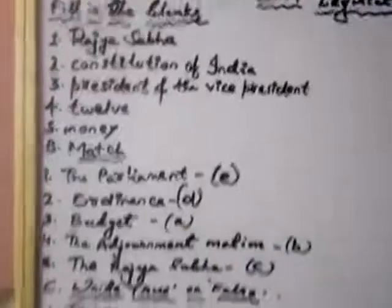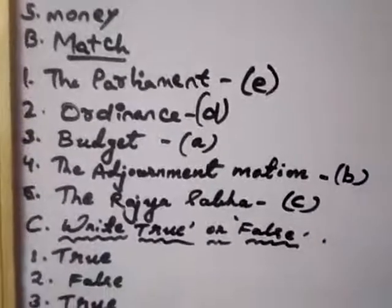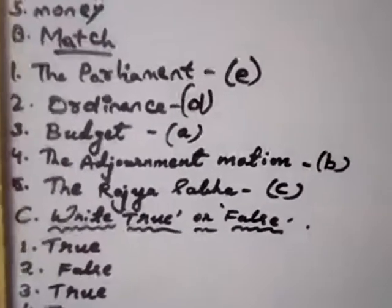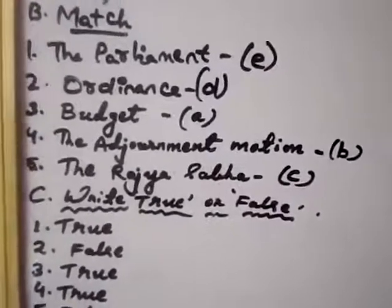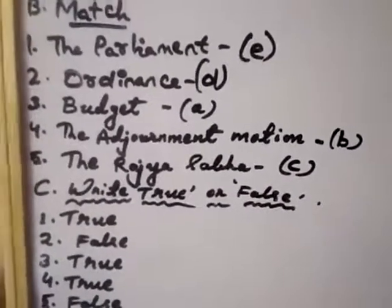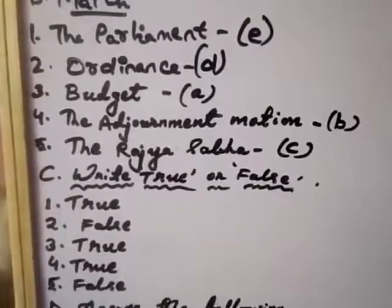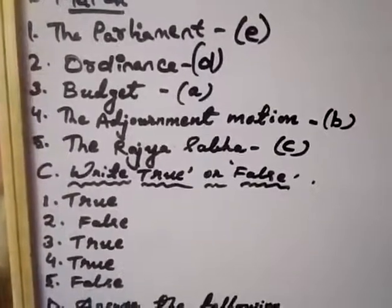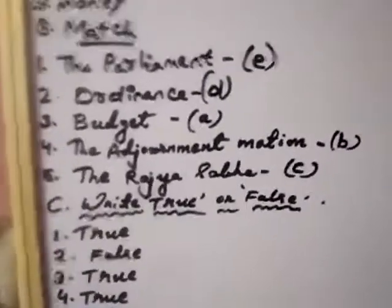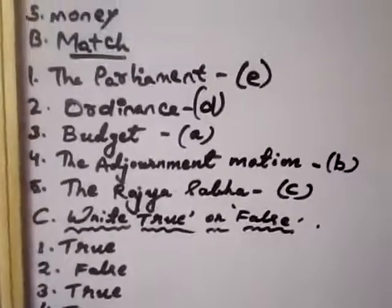Next, match the following. Number one, parliament is the lawmaking organ. Second, the ordinance is the temporary law. The budget, number three, is the estimate of income and expenditure of the government. Number four, the adjournment motion passes in the Lok Sabha. And the Rajya Sabha is the permanent house.